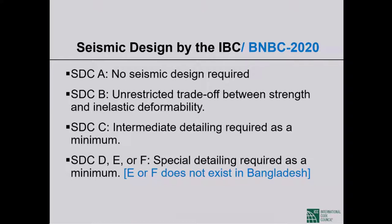If the seismic design category is D — which is the highest in Bangladesh — you must as a minimum provide special detailing. Your only choice is a special moment frame or special shear wall with R=8. There is no option of going to intermediate or ordinary detailing and taking the penalty of lower R values.